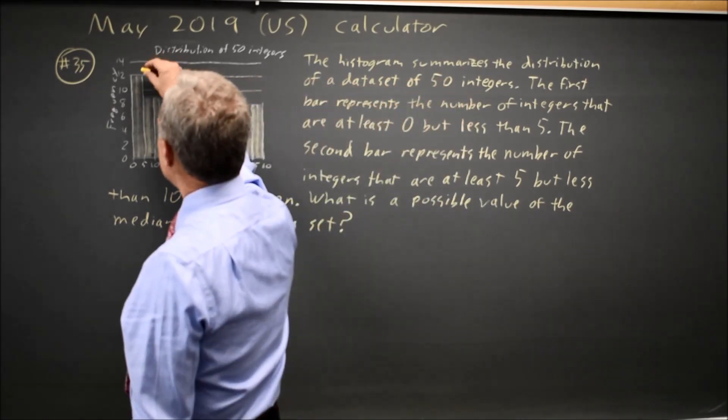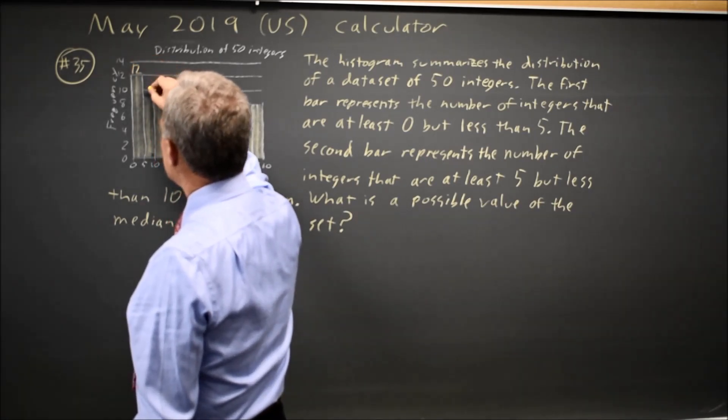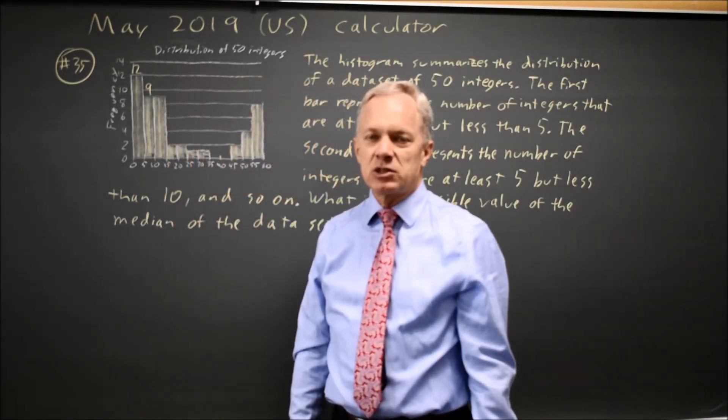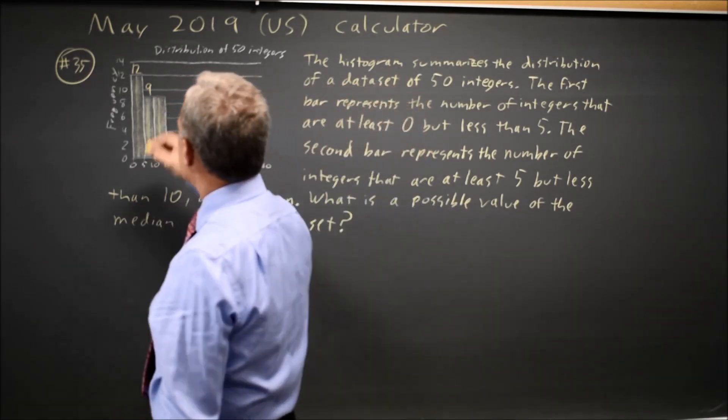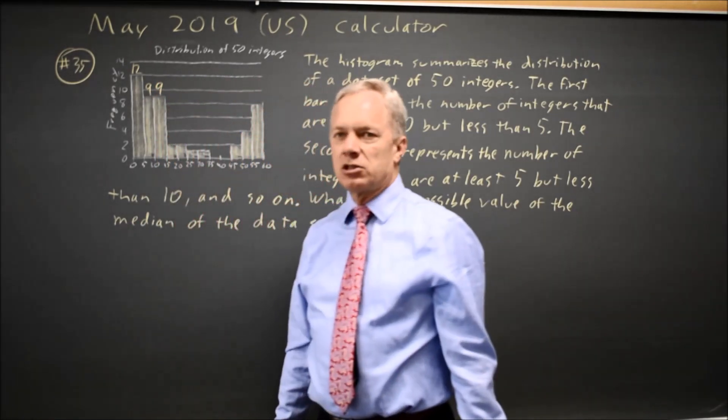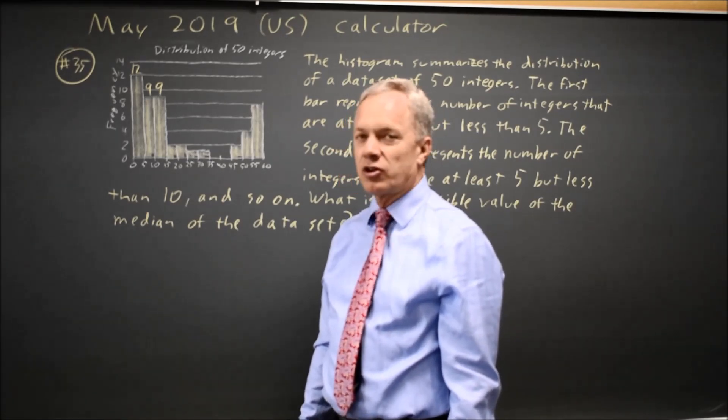So if I count how many in each group, I have 12 from 0 to 5, and 9 more from 5 to 10. So that's 21. And 9 more from 10 to 15, and that's a total of 30.